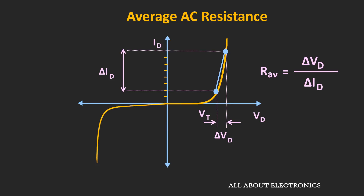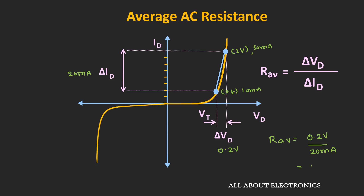The average AC resistance equals the change in voltage divided by the change in current. For example, if a large AC signal causes voltage variation from 0.8V to 1V and current variation from 10 mA to 30 mA, then the change in current is 20 mA and the change in voltage is 0.2V. The average AC resistance equals 0.2V divided by 20 mA, which is 10 Ω.